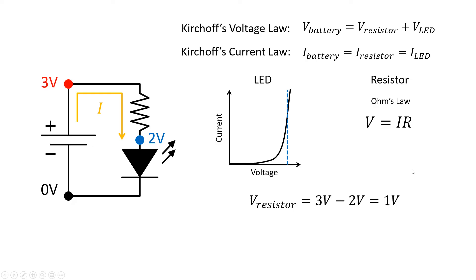I can now use Ohm's law to calculate the current through the resistor. The current through the resistor is equal to the voltage drop across the resistor divided by the resistance. That's one volt, and in this case I used a 47 ohm resistor, so if we divide those numbers we get about 21 milliamps. Remember that the resistor and the LED are in series, so the current through the resistor also has to equal the current through the LED.